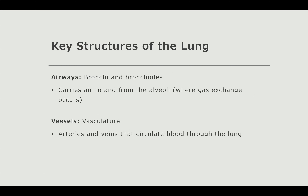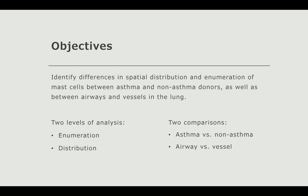There are some key structures I'm going to talk about. First, there are airways, also known as the bronchi or bronchioles. Bronchi are bigger airways; bronchioles are smaller airways, and they carry air to and from the alveoli, which is where gas exchange occurs. Vessels refers to vasculature — arteries and veins that circulate blood throughout the lung.